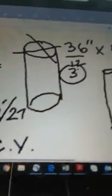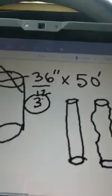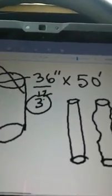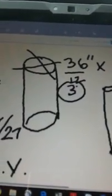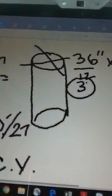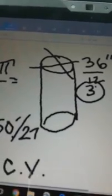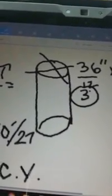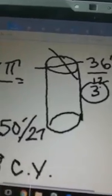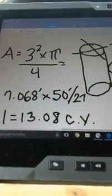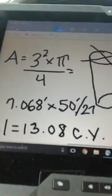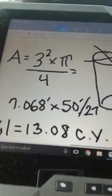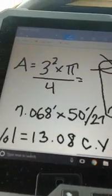If this is the design - 36 inches by 50 feet designed by the engineer - and the drilling contractor drills exactly 36 inches in diameter and 50 feet deep, then we should be close to 13.08 cubic yards, not 17 cubic yards.